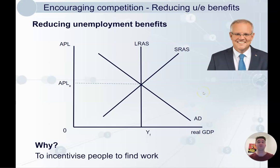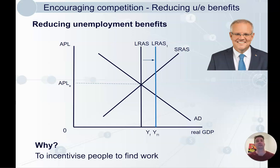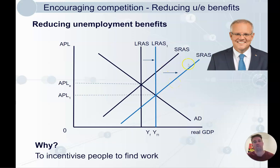Reducing unemployment benefits is another market-based policy. It seems harsh, but the theory is that if it's too comfortable to be unemployed, people don't have an incentive to better themselves and find a job. If they really need to get a job, people will work out that they need to be more productive, and that will increase potential output in the economy. If we're more productive we're also decreasing cost of production, so SRAS shifts as well.